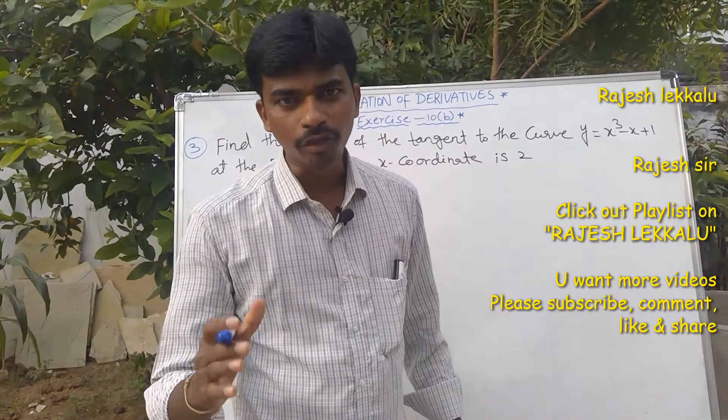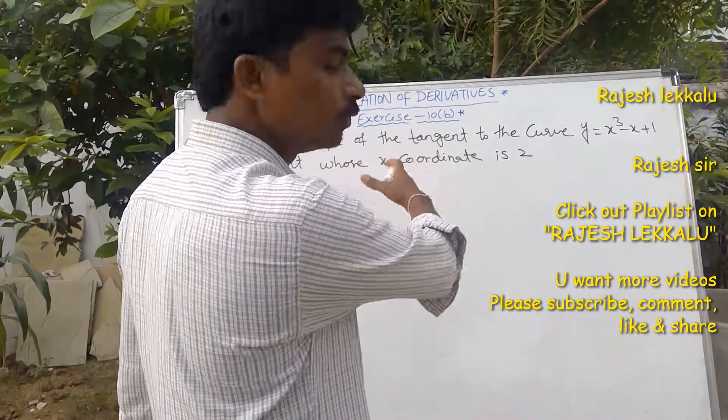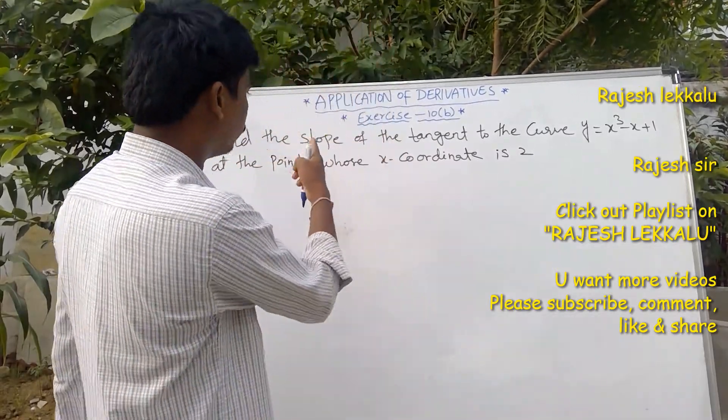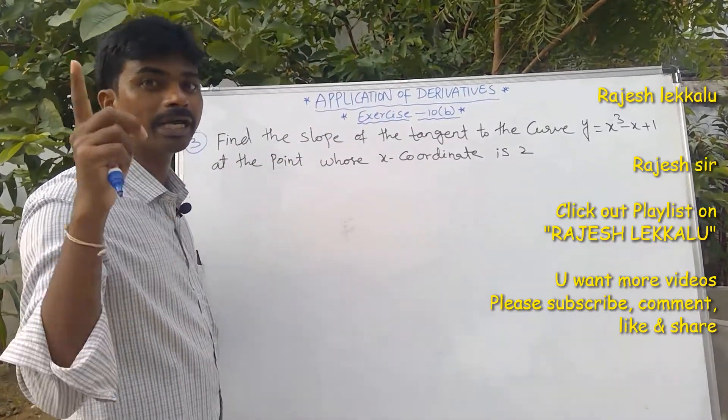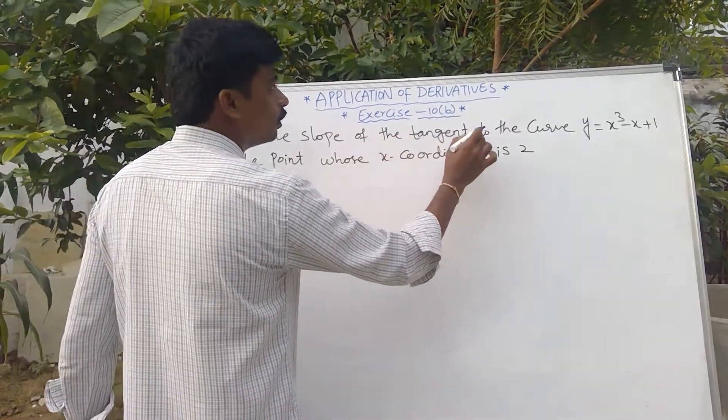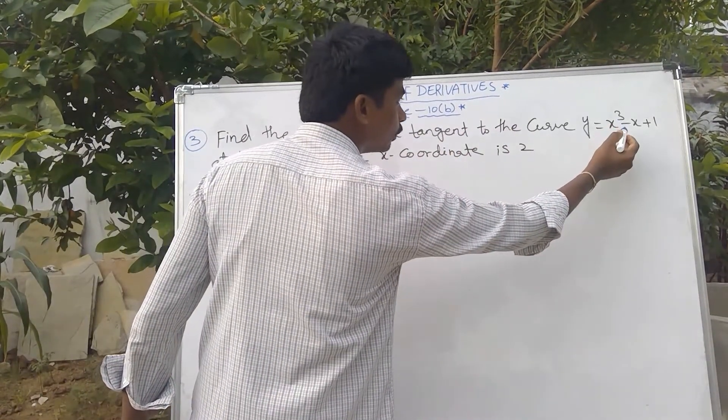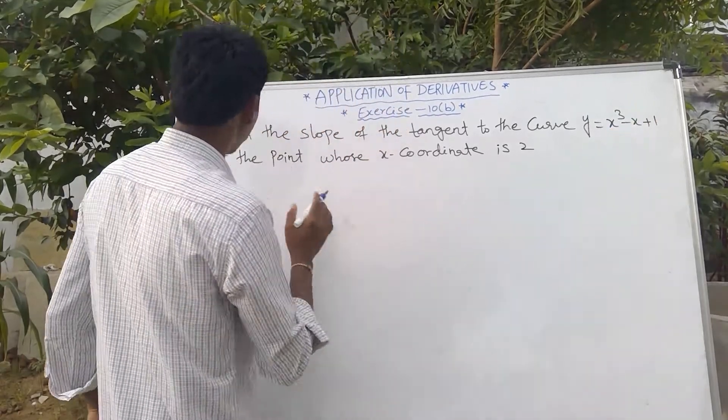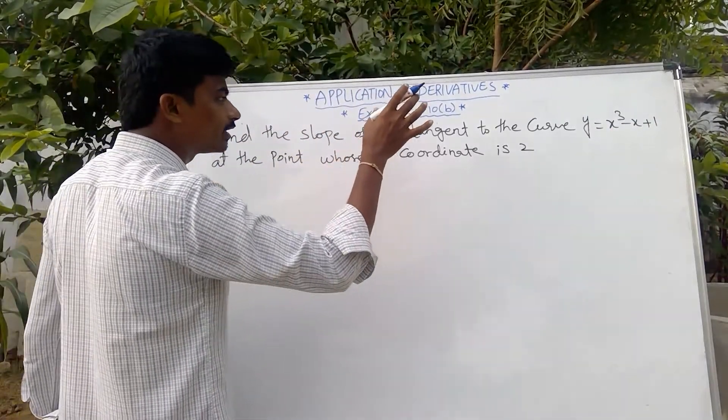Welcome to Rajesh Rekaloo. Today our topic is applications of derivatives, exercise 10b, third problem, intermediate first year mathematics 1b. Problem: find the slope of the tangent to the curve y = x³ - x + 1 at the point whose x coordinate is 2.